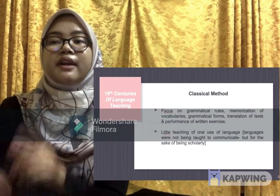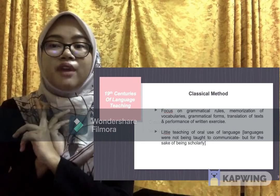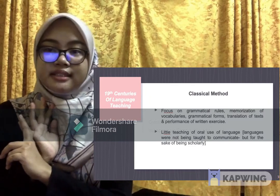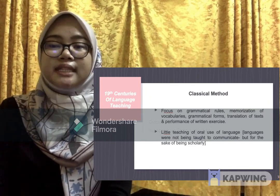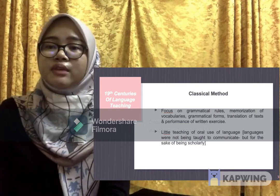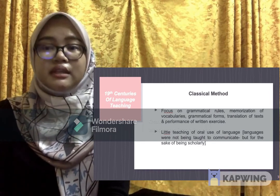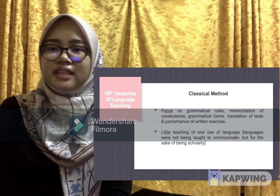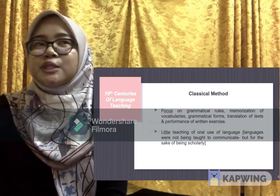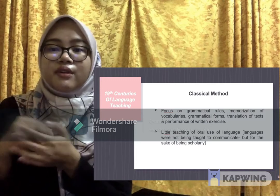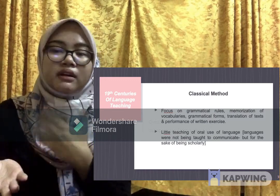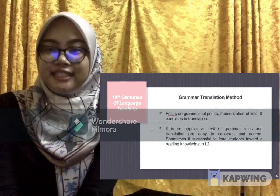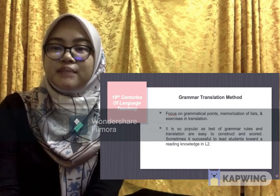In the Western world, learning a foreign language has always been associated with either Latin or Greek, taught using the classical method. The classical method focuses on grammatical rules, memorization of vocabulary, grammar forms, translation and performance of written exercises. This method was adopted as a standard means for teaching foreign languages, even though little thought was given to communicating or oral use of the language — a foreign language was being learned for the sake of being scholarly, such as being able to read a foreign language book. In the late 19th century, the classical method came to be known as the grammar translation method.